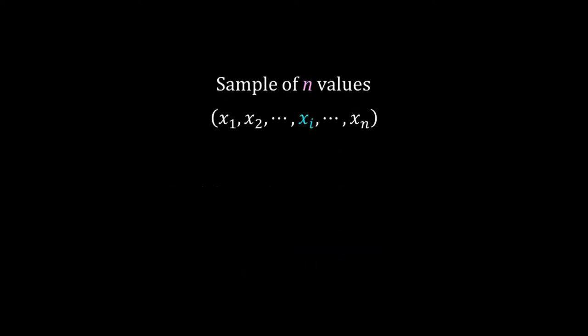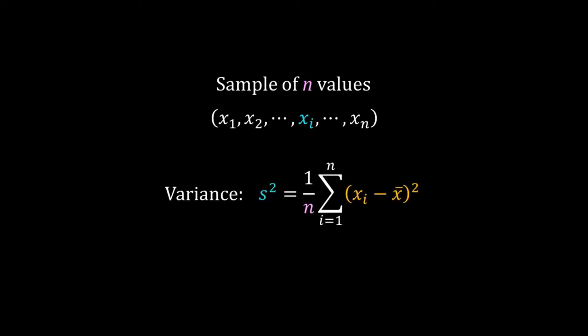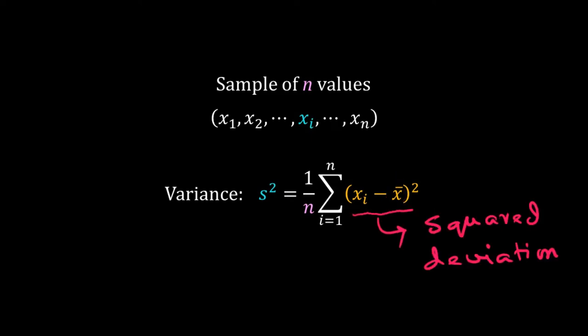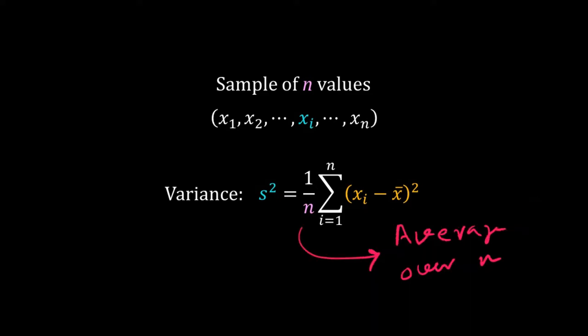Suppose we have a sample of n values. Then following the generalized definition we can say that the variance of the sample is the average of the squared deviation from the mean. Here x-bar is the mean of the sample. We are calculating the squared deviation of each data point from the mean and then taking the average. From the sample we want to calculate the statistics of the population.